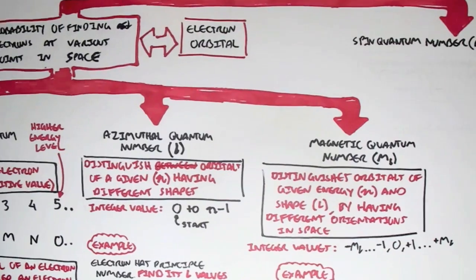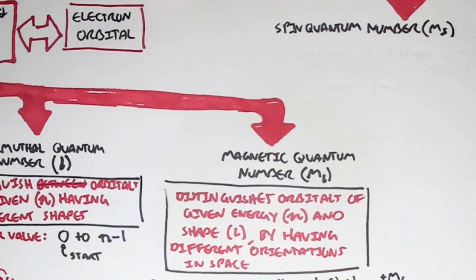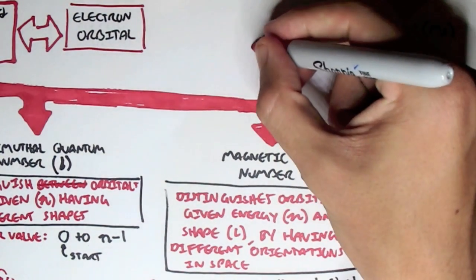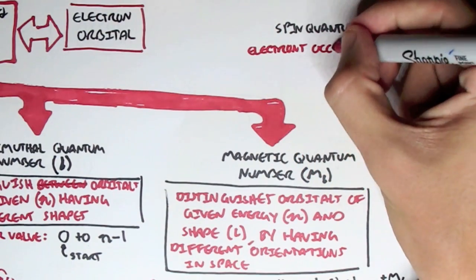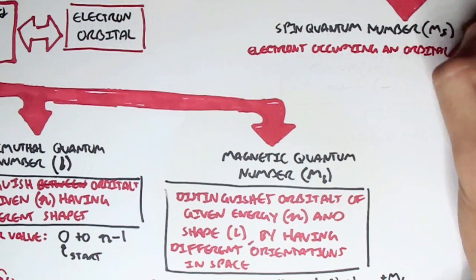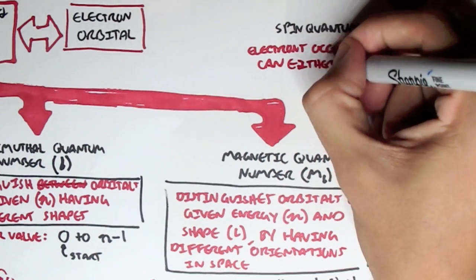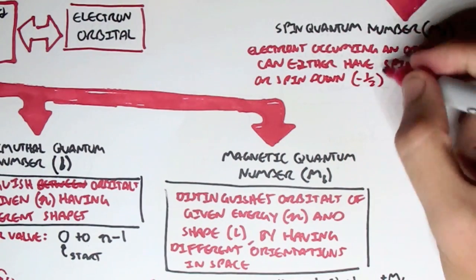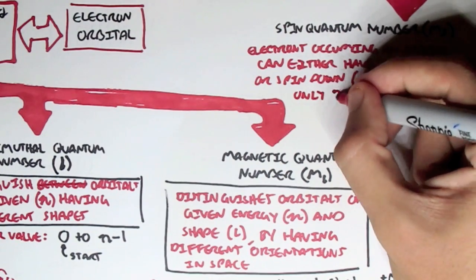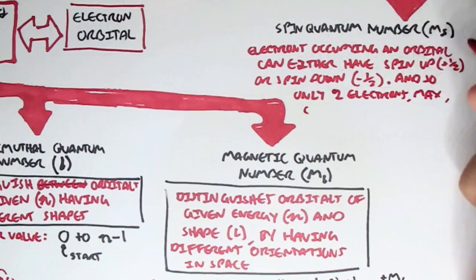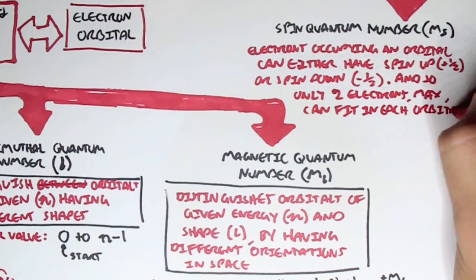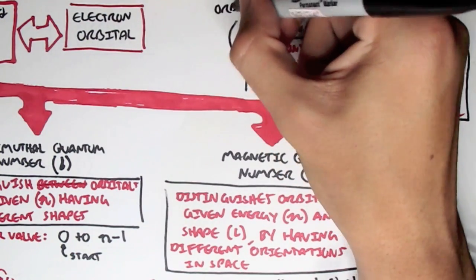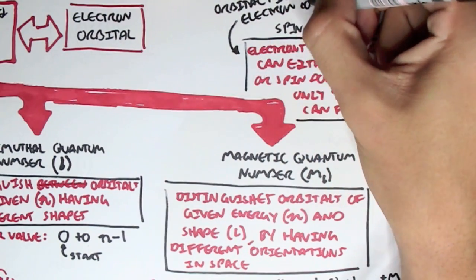Now let's look at the very last quantum number, the spin quantum number, ms. This doesn't tell us the probability of finding an electron in various points in space. It just tells us the behavior of an electron. Essentially, electrons occupying an orbital can either have a spin up or a spin down. Because of this, only two electrons maximum can fit into each orbital — one can only have spin up and the other can have spin down. We'll talk about spin quantum numbers more in the context of orbital filling, which is something to do with electron configuration, which we'll look into in the next video.